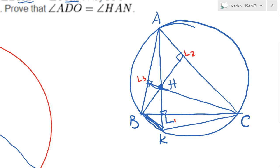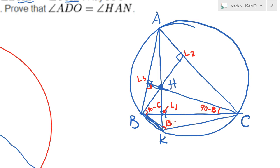Focusing on triangle BCL3: since the full angle at B in triangle ABC is angle B, this angle in triangle BCL3 is 90 minus B because there's a 90-degree angle at L3. Similarly, in triangle BCL2, this angle is 90 minus C. Now, angle B in triangle ABC subtends arc AC in the circumcircle, and that same arc is subtended here, so this angle is B.